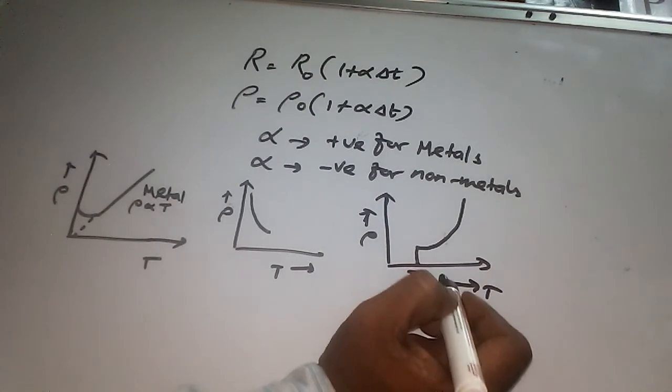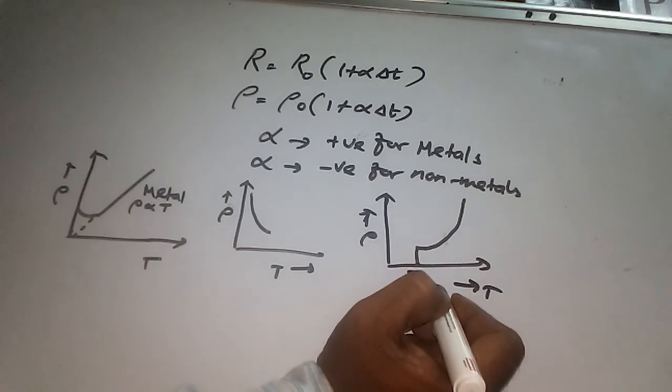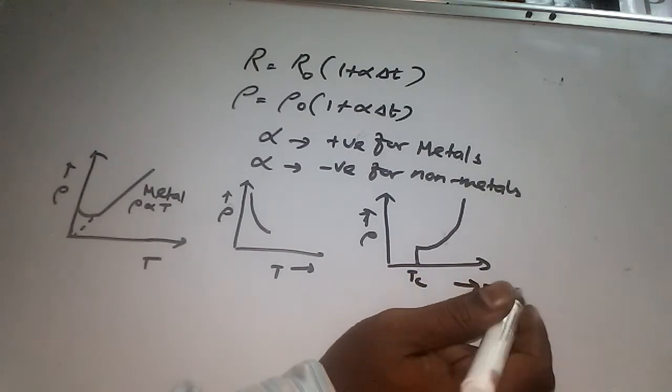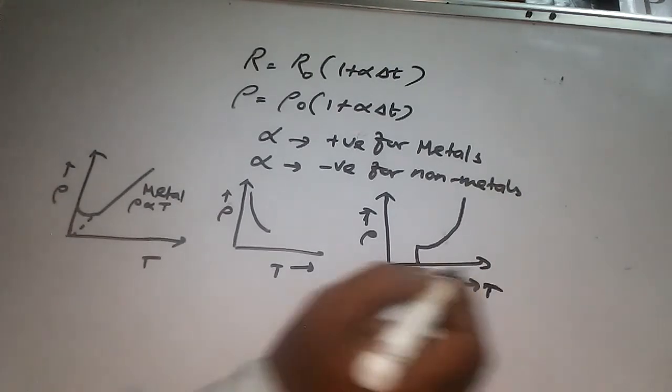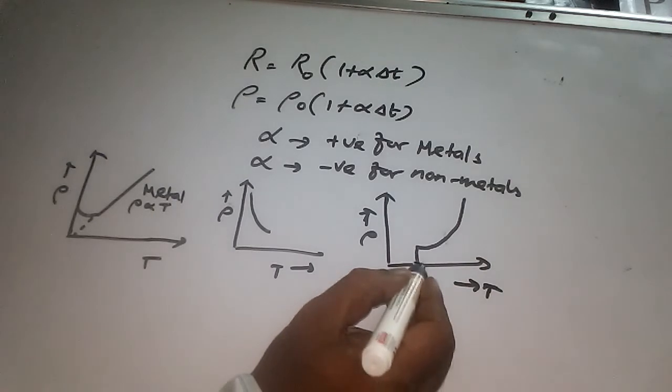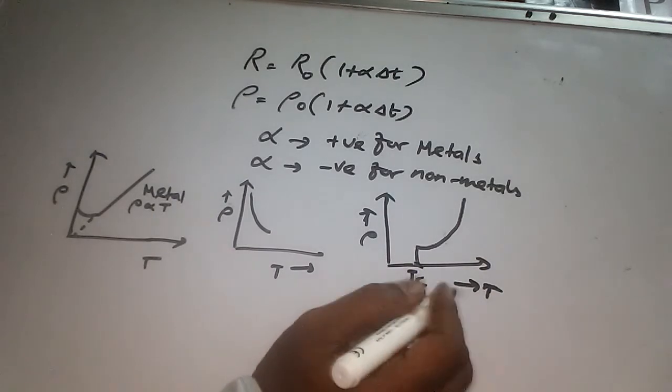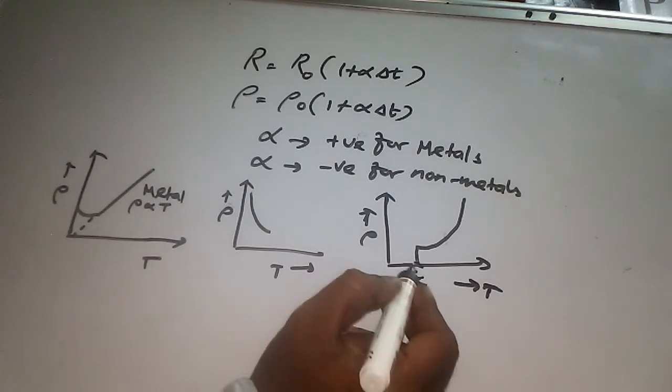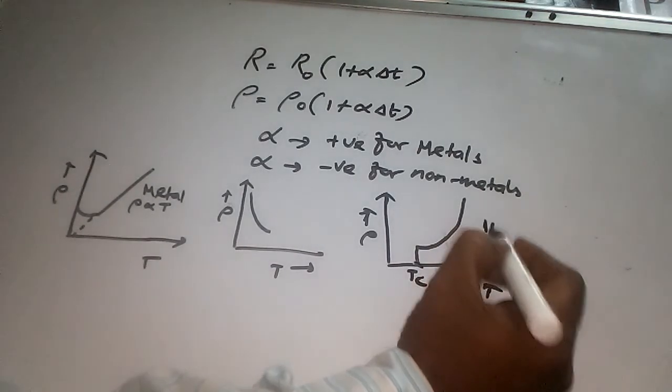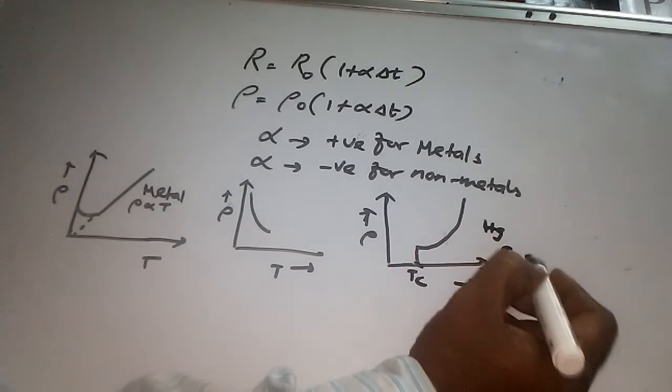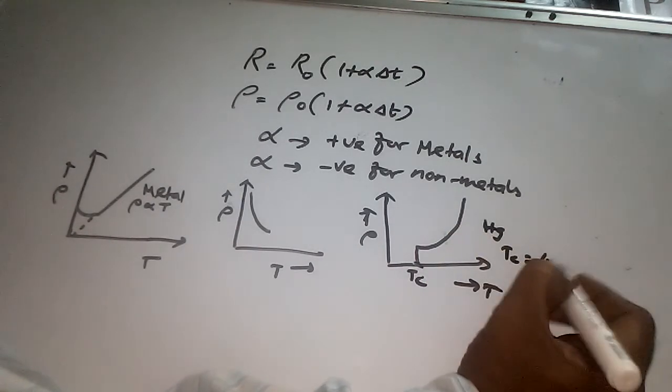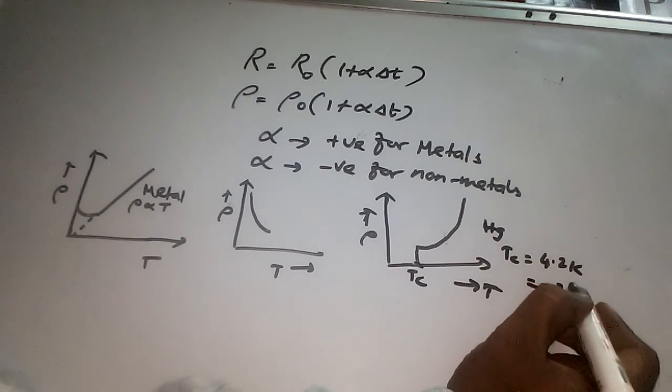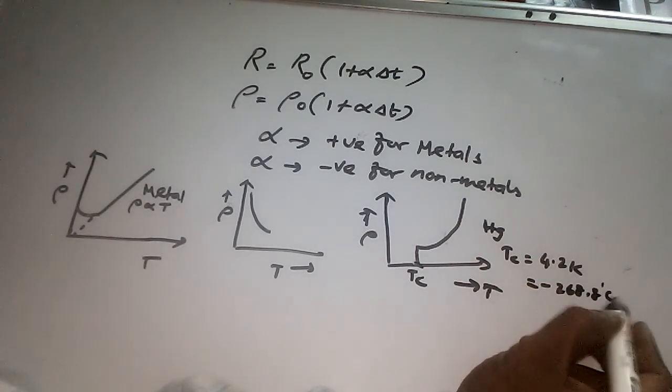The critical temperature is the temperature at which resistance is zero. For example, for mercury, Tc equals 4.2 Kelvin or in degrees Celsius, minus 268.8 degrees Celsius.